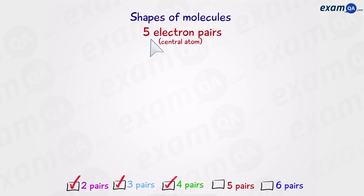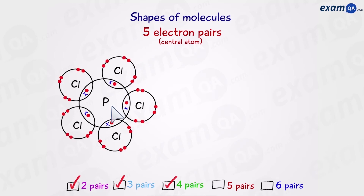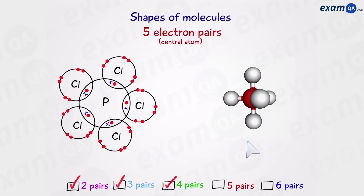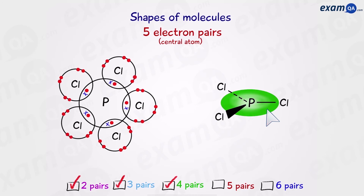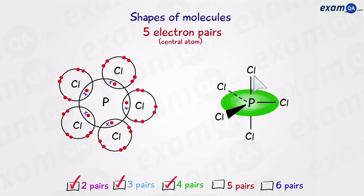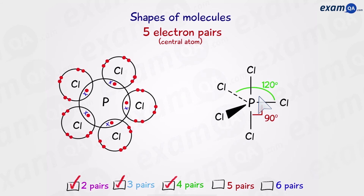Moving on to five electron pairs — like the earlier example, phosphorus pentachloride has five bonded pairs of electrons. This molecule is more complex because it has two bond angles. Three chlorine atoms are on the same plane, dividing a circle into three sections, giving angles of 120 degrees between them. The other two chlorine atoms go above and below the plane, with an angle of 90 degrees between them and the plane. This shape is called trigonal bipyramidal.